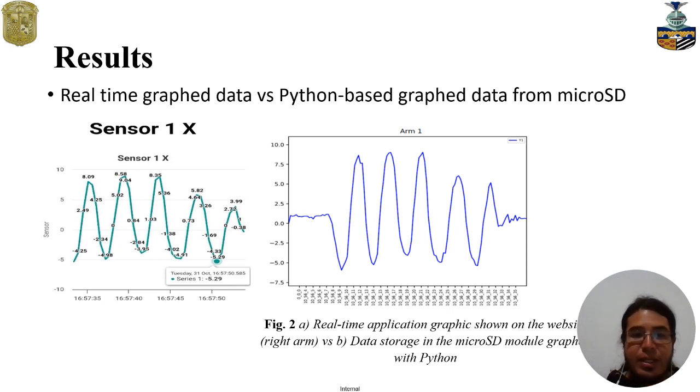Here, we have some results. For example, this is the real-time graph data in the application, here in the left part, versus the Python-based graph data that is taken from the files stored in the microSD memory. Here we have, in this figure, is the right arm, as you can see. This is the movement done in a test by the right arm, this pendulum movement of a person walking. Here is the data graph in the real-time application, and here is the data in the offline information. The health expert can analyze and do a better analysis. This is the results for a test for the right arm.